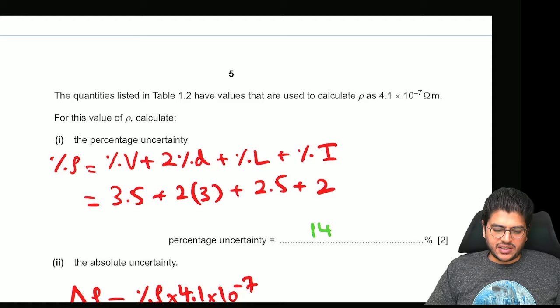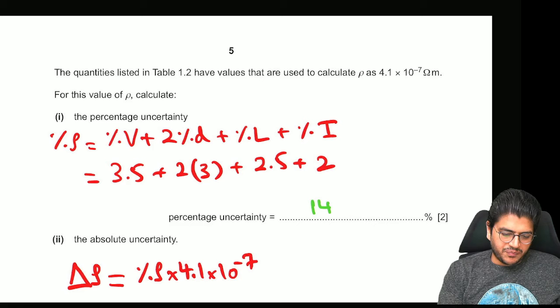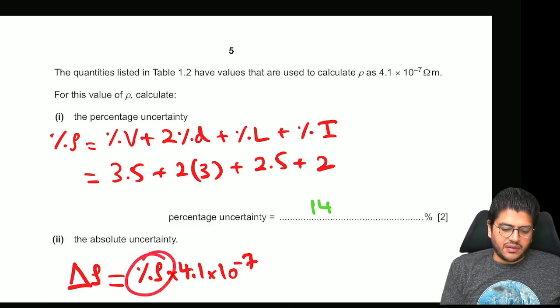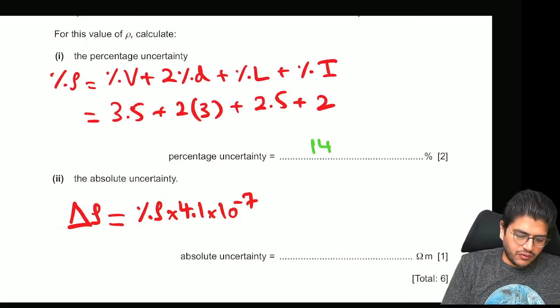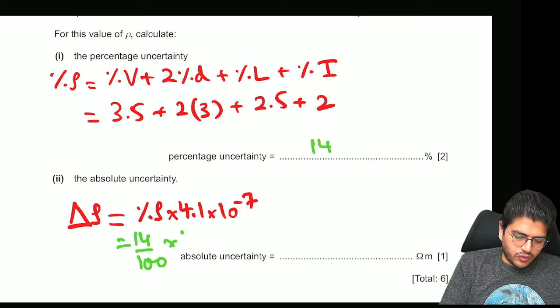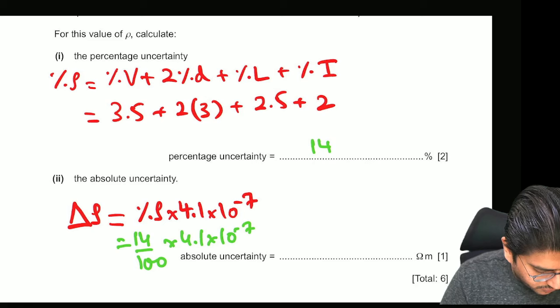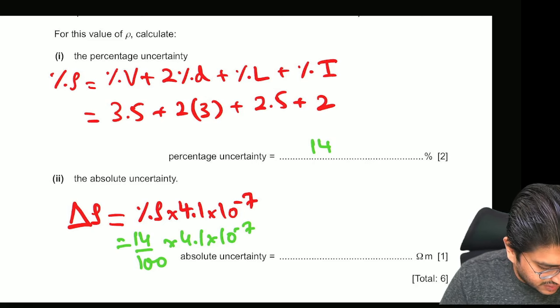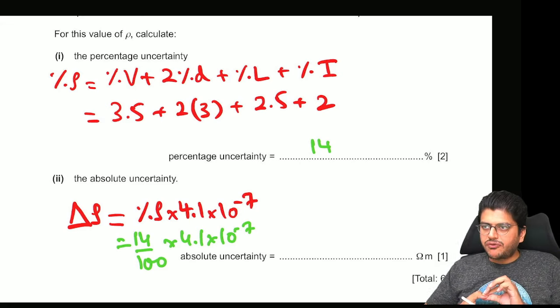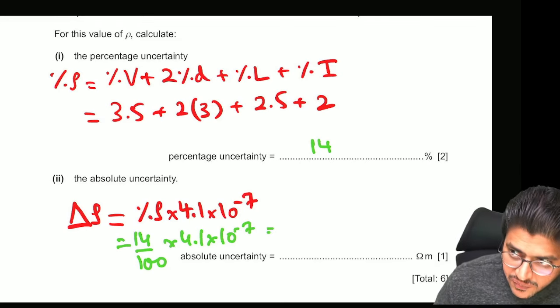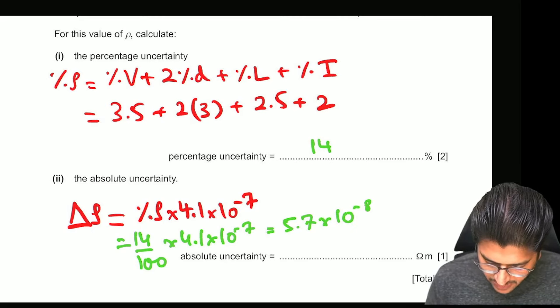So that's going to be 3.5 plus 6% plus 2.5 plus 2. And the answer that you should get is 14%. Next they ask you to calculate the absolute uncertainty. Now absolute uncertainty you always remember is the percentage uncertainty times the actual value of the density. The actual value was 4.1 times 10 to the minus 7. So basically you're doing 14% of 4.1 into 10 to the power minus 7. And if you do that in your calculator 0.14 times 4.1 times 10 to the minus 7, it should give you a very small number.